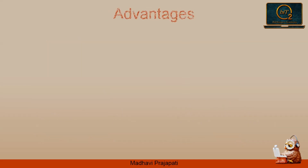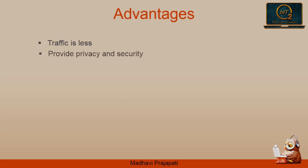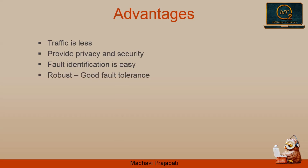The advantages of mesh topology: The use of dedicated links guarantees that each connection can carry its own data load, thus eliminating traffic problems. As separate links are used for each device, only the intended recipient can see it, so privacy and security are provided. Because of dedicated links, fault identification is easy. If one link becomes unavailable, it does not affect the entire system, so it is robust. In mesh topology, individual links allow it to handle heavy traffic, and it is easy to expand.